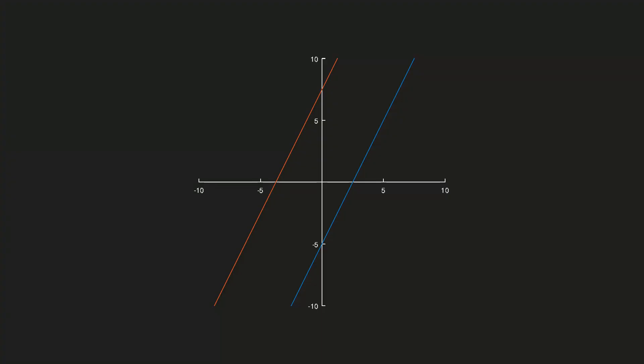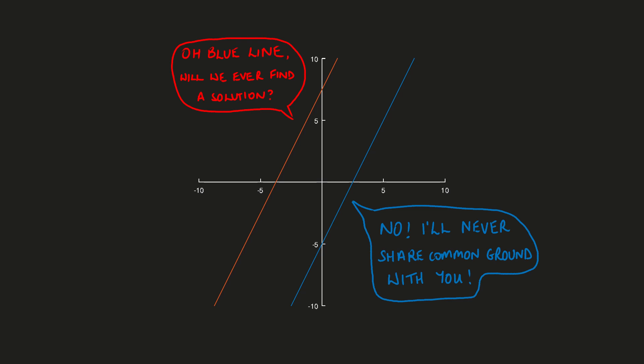Let's have a look at what these look like on the graph. As you can see, we have two lines that are completely and utterly parallel — they are never going to cross, and so they will never share an X and Y value that satisfies them both simultaneously. Although on the surface these just look like another two simultaneous equations, we've realised that actually there are no solutions whatsoever.